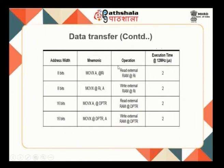Moving data between internal registers takes only one machine cycle. However, MOVX operations require a minimum of two machine cycles because the processor must first read the address, then go to external memory, search for the data, and return with it. This additional external access time means MOVX takes significantly more time than internal register operations.